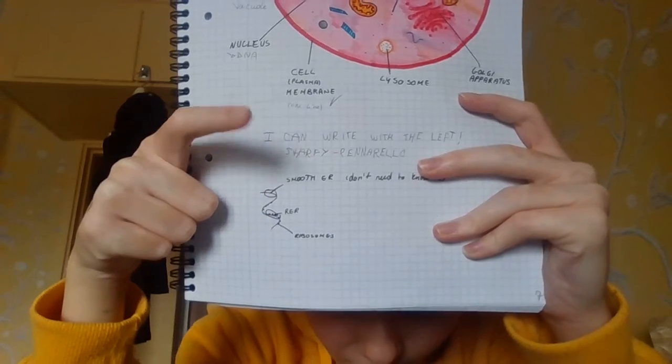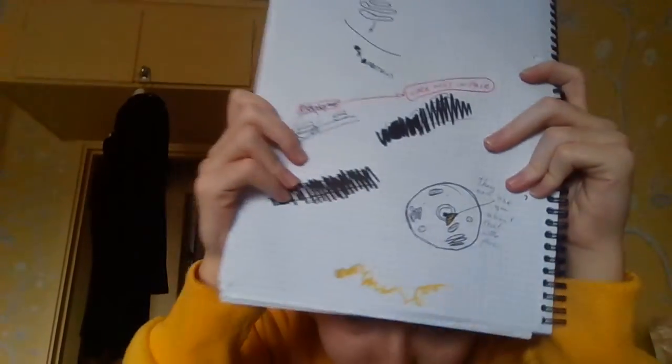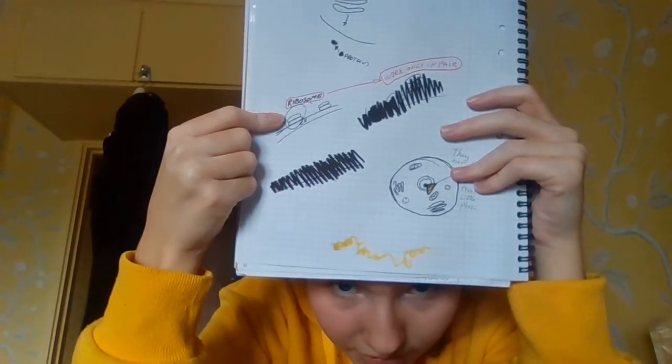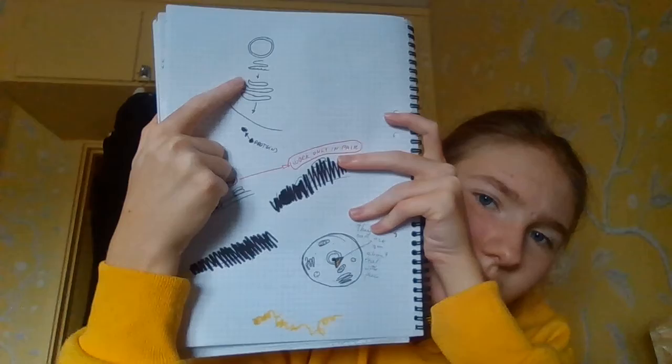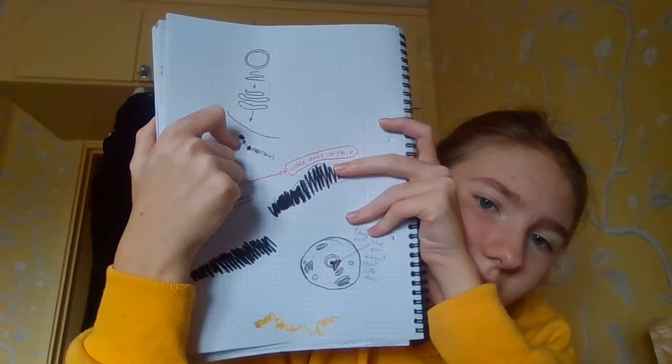When there are these curvy things, you call it rough. These dots are ribosomes — I'm going to show you a drawing. The ribosomes are the little dots that are here. And these are proteins — the protein is the thing that goes out.